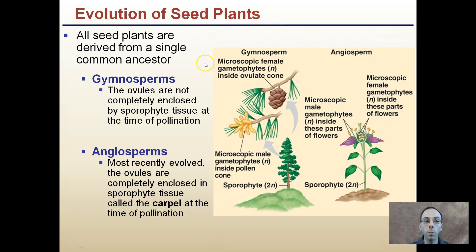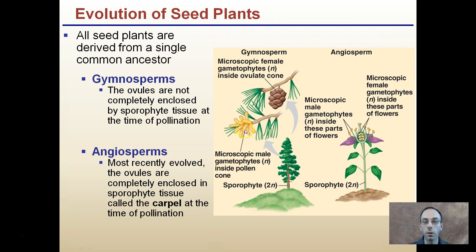All seed plants are derived from a single common ancestor, and there are two main branch points: gymnosperms and angiosperms. In gymnosperms, the ovules are not completely enclosed by the sporophyte tissue at the time of pollination, as evident by the pine cone. The microscopic female gametophyte (N) is inside the ovulate cone, and the microscopic male gametophyte (N) is inside the pollen cone.